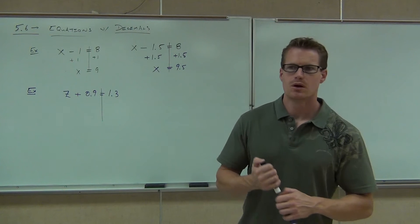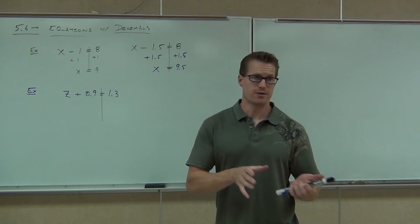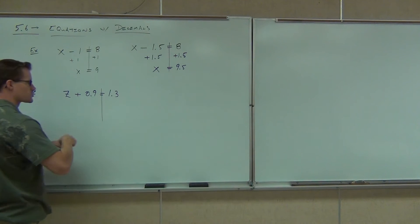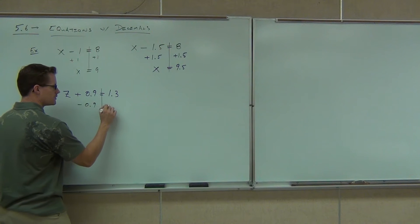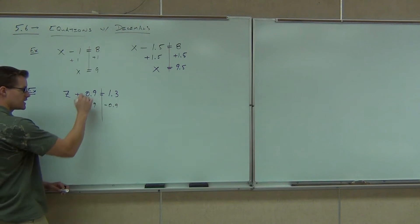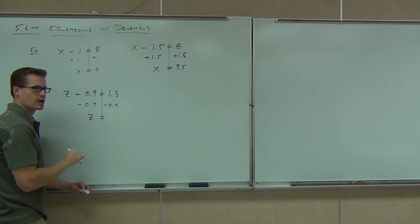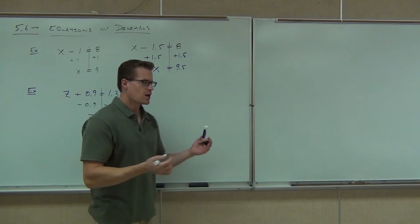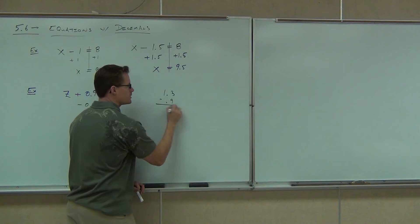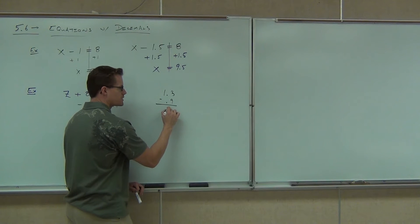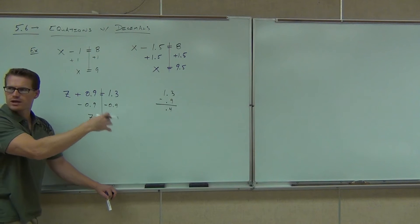What's your variable here? Z. What are you trying to get rid of? 0.9. How are you going to get rid of that? Subtract it — and we don't just mean from one side. We're going to have Z on the left-hand side. On the right-hand side, 1.3 minus 0.9. There's no shame in doing the work off to the side if you need that. 1.3 minus 0.9 gives you 0.4.